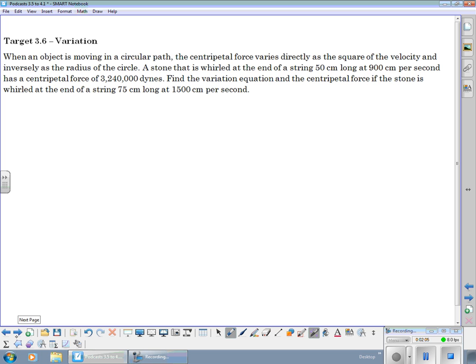So the next one, object moving in a circular path, the centripetal force varies directly as the square of the velocity, and inversely with the radius of the circle. And we've got our constant out there.